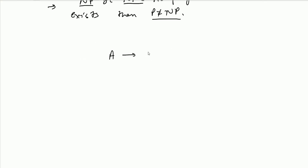There are important properties to know. If I am reducing A to B in polynomial time, and A is NP-Hard, then B is also NP-Hard. Why? Because if B were polynomial time solvable, then A would also be polynomial time solvable — we could just transform A to B and solve B. But since A is NP-Hard, B must also be NP-Hard, even if we can transform A to B in polynomial time.